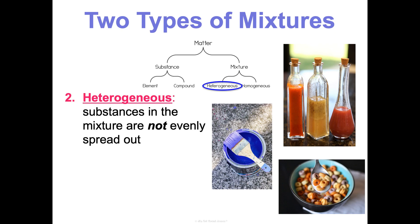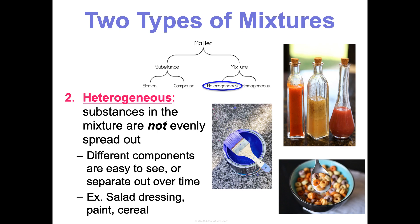A heterogeneous mixture is often the easiest to identify because the substances in the mixture are not evenly spread out. The different components are easy to see or they separate out over time. Salad dressing, paint, cereal, these are all things that we can really see the different components easily, especially I think of paint. When you let a paint can sit out, you get this layer of liquid and oils at the top, which separates out from the bottom, which is why you have to shake it or stir it before you use it.